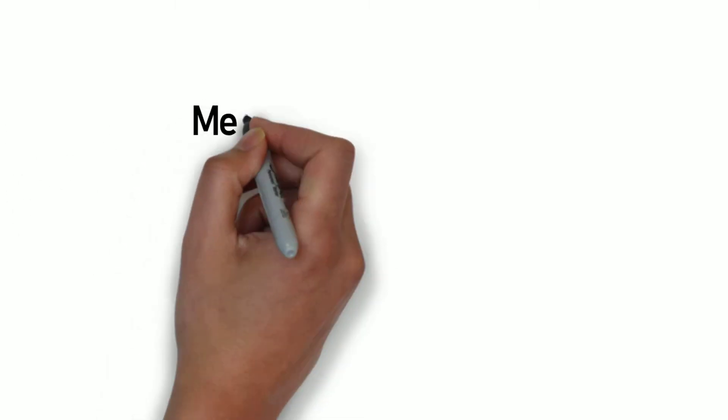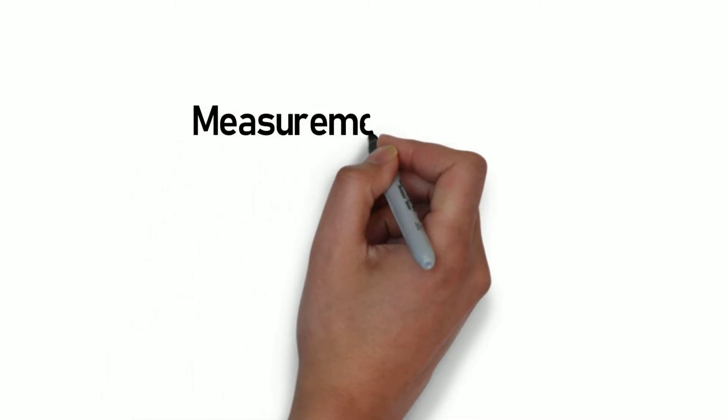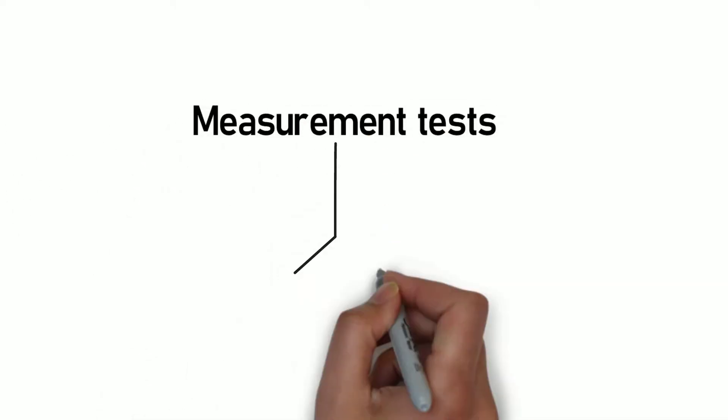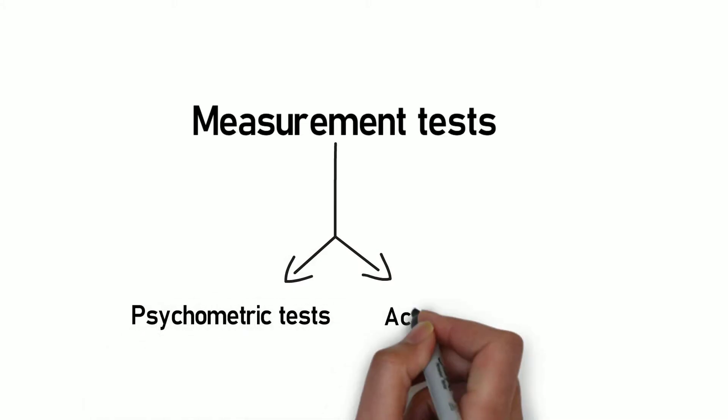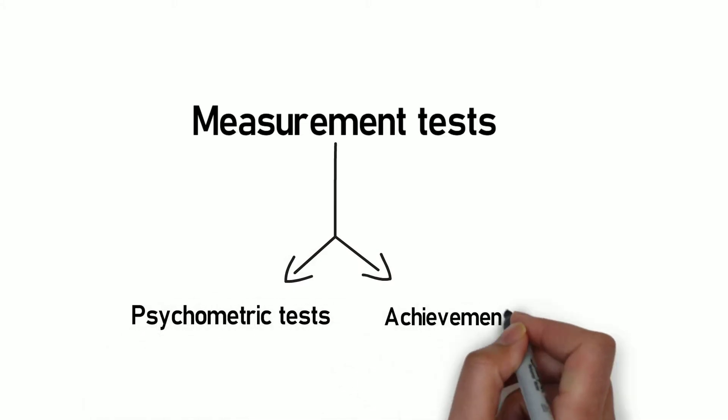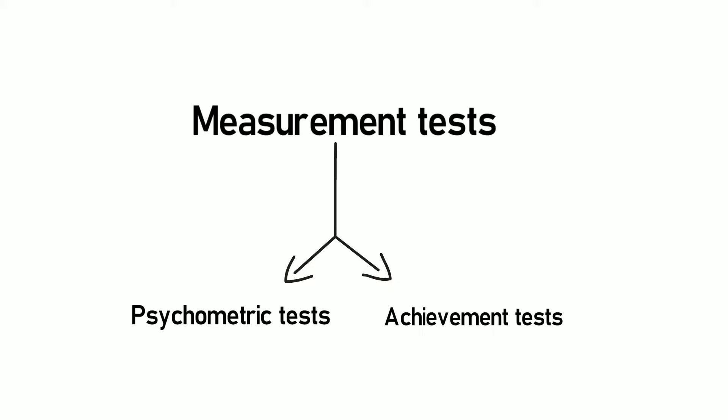The term validity is used in two contexts. One is in the context of a measurement tool — such as a psychometric test or an achievement test. The validity of such an instrument shows the effectiveness of the measurement tool. An instrument having high validity means it is very effective and it measures what it claims to measure.